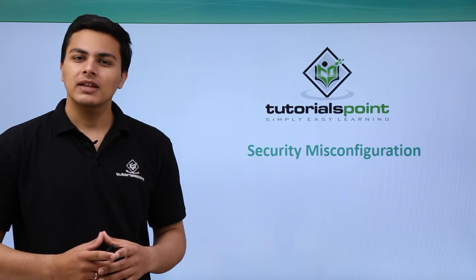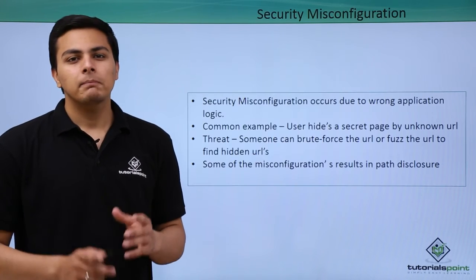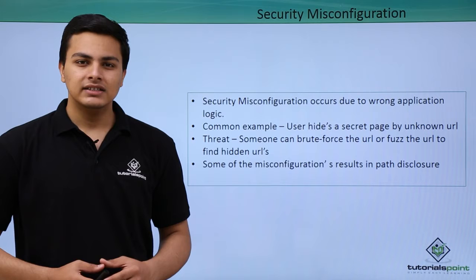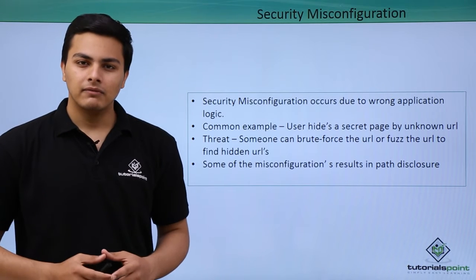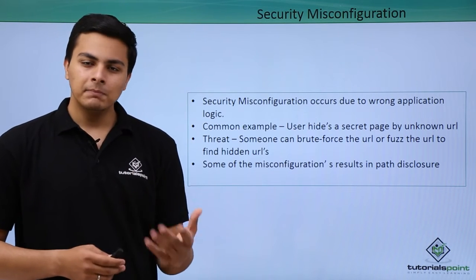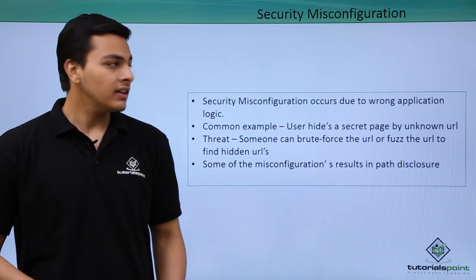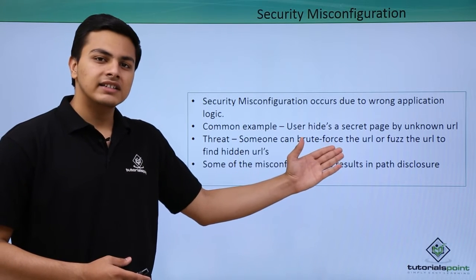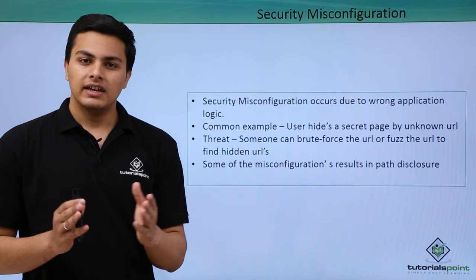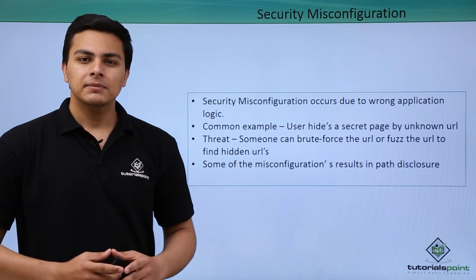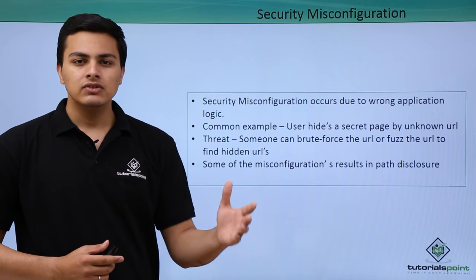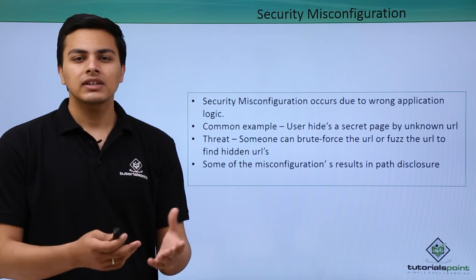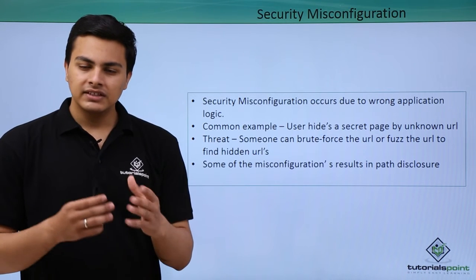Let's talk about security misconfiguration issues. The main cause is wrong application logic — while developing a web application, a web developer implements some wrong application logic which results in security misconfigurations. One common example is a user hiding secret pages by using an unknown URL. The web developer wants to hide some secret pages from users by changing the name of the URL so that users can't figure out what it is.